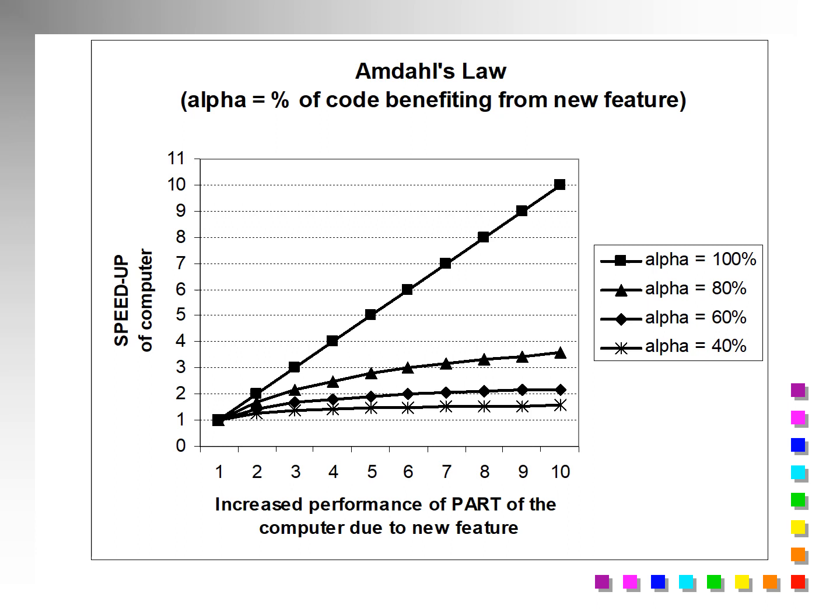You can see that you get twice as much speed for the amount you're putting in — it's a linear curve. A 45 degree angle is the maximum that you're going to get. But then you get a curve that drops off more and more if you have a smaller part of the code that actually benefits, as you would expect.